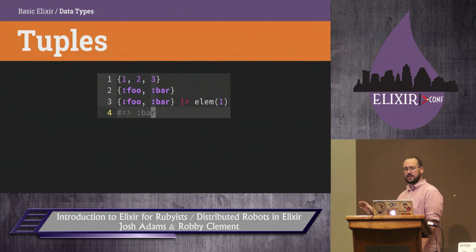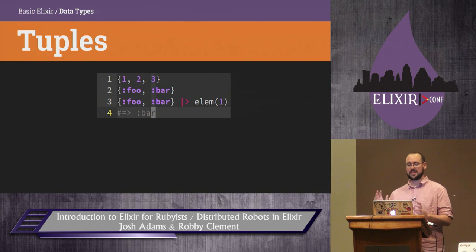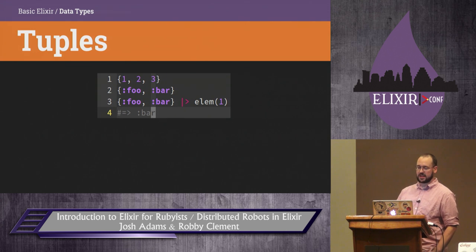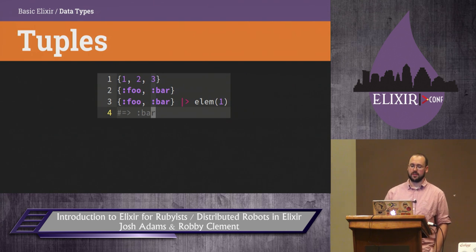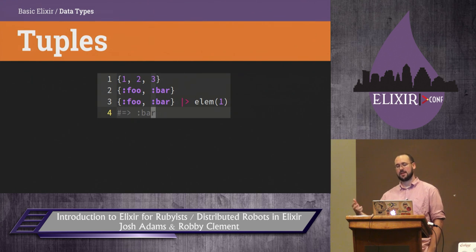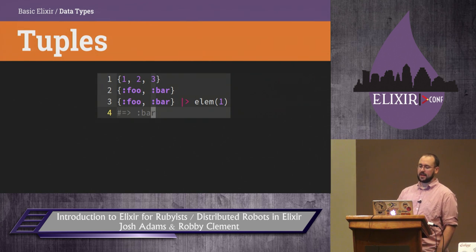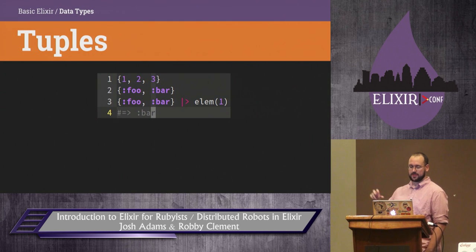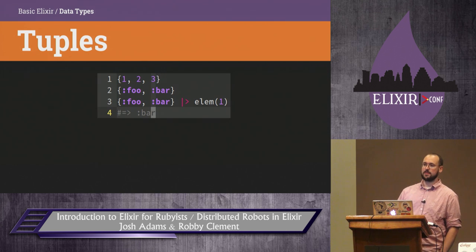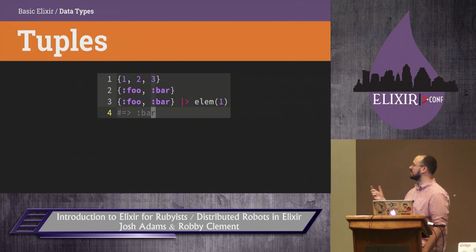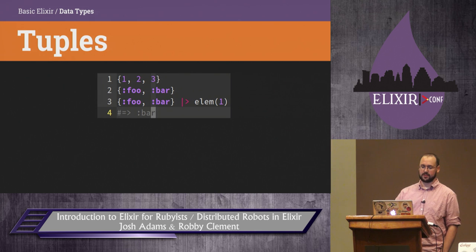Tuples are just ordered collections — curly braces surrounding items separated by commas. Use them in pattern matching very commonly and as return values from various functions. Those two facts aren't unrelated, because you want to pattern match on your return value. Tuples are actually contiguous areas of memory behind the scenes, so they can be accessed in constant time rather than lists.